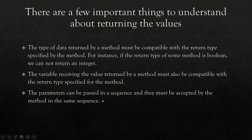The variable receiving the value returned by a method must also be compatible with the return type specified for the method. Just as you hand your notebook to someone in the computer lab who is also from the computer lab — the person receiving should be of the same type. The parameters can be passed in a sequence and they must be accepted by the method in the same sequence. If the method accepts int and float, the call must also pass int and float in the same order.